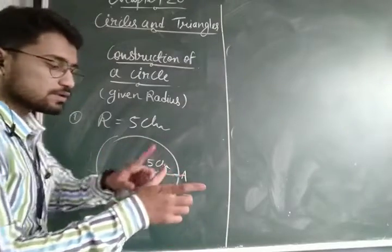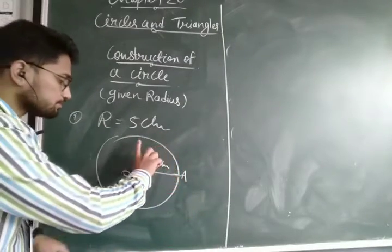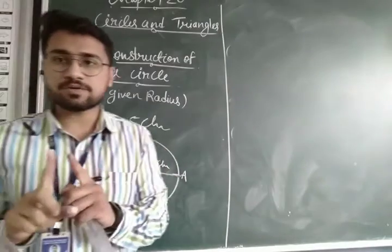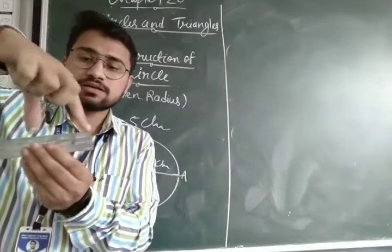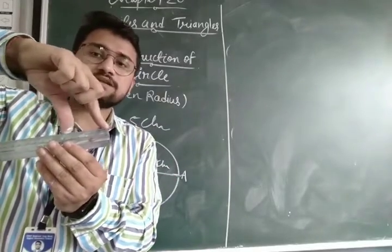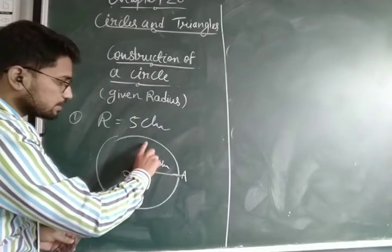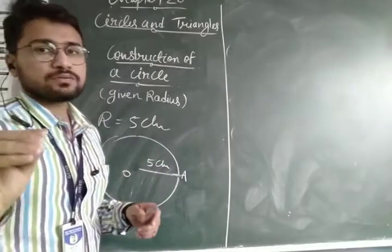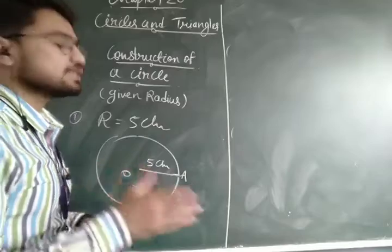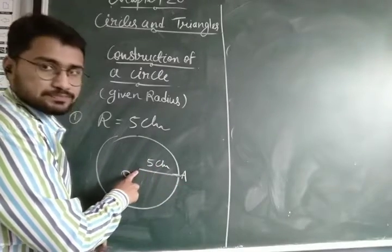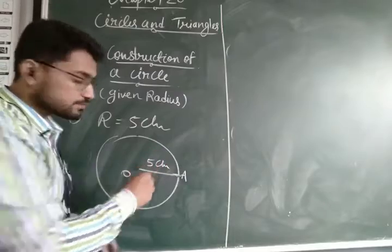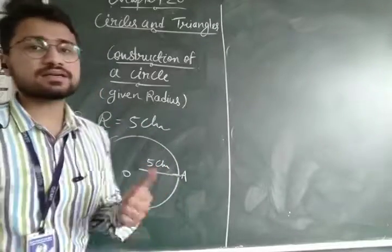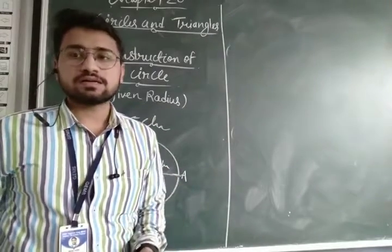If I show you with my fingers — this one is the needle portion and this one is the pencil portion. So first of all, step number one: spread the compass to the given scale, like five centimetres. The needle portion will be at the centre and the pencil portion will trace the circle. Be careful while drawing the circle as there can be chances of the compass slipping, so hold it properly. This is how you can construct the circle with the given radius.